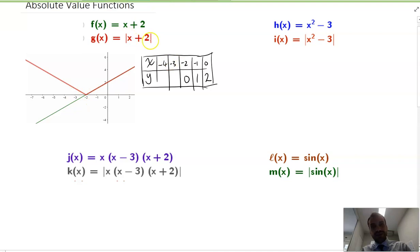So, negative 3 plus 2 is negative 1. But the absolute value of negative 1 is 1. And this is where we get our little bounce here. Negative 3, 1. Negative 3, 1. Right there.